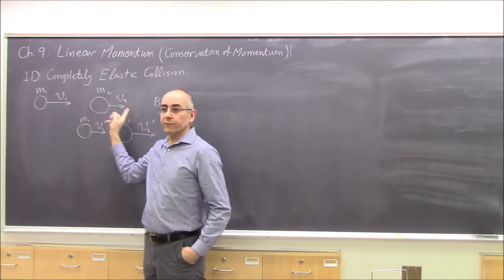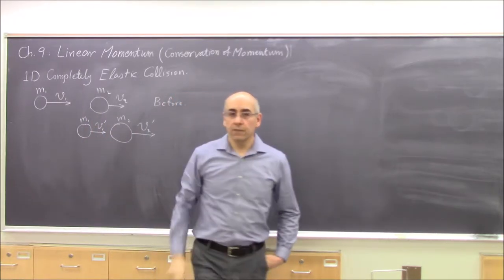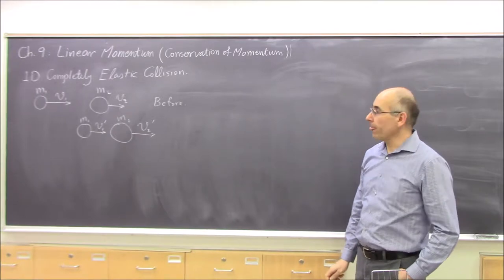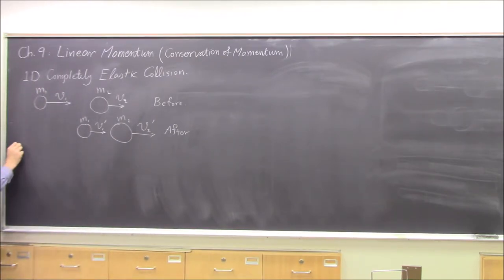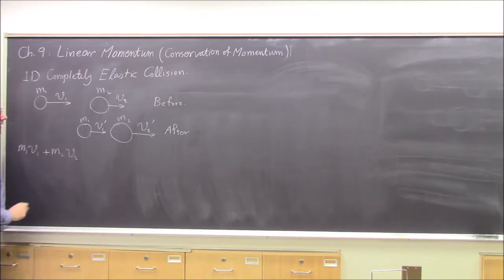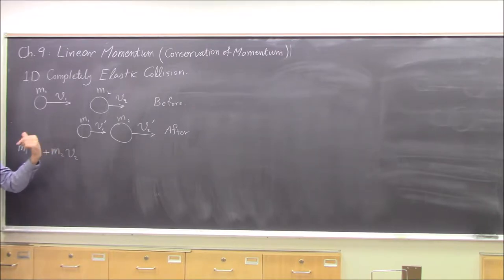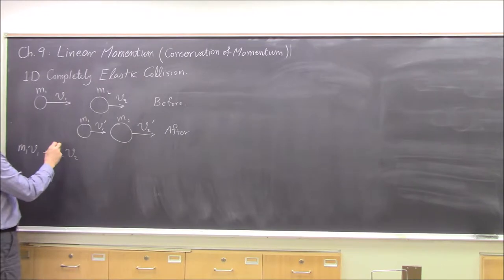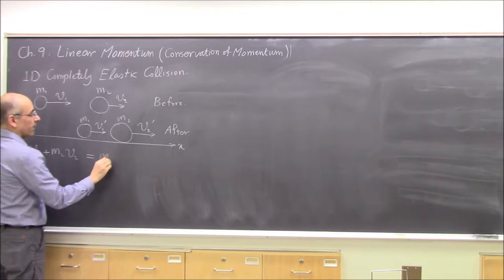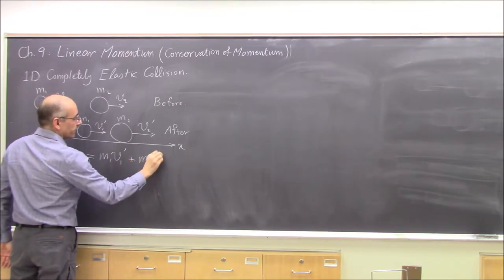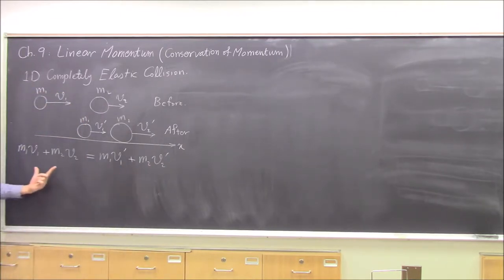Suppose we know V1 and V2 and we know the masses — we want to know V1 prime and V2 prime. Momentum is conserved, meaning total momentum before equals total momentum after. Since it's one-dimensional, these are just X-direction components — velocities can be positive or negative. If an object is going to the left, the velocity is negative. So M1V1 plus M2V2 equals M1V1 prime plus M2V2 prime.